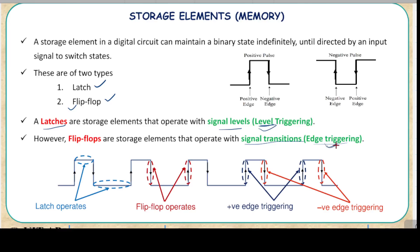Basically, both devices will store a status of the signal, either it is high or low — meaning 1 or 0 — but they work on the basis of triggering, which is how these devices actually store the data. Before going further, we should know what is the meaning of level triggering and what is the meaning of edge-triggering.